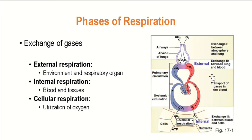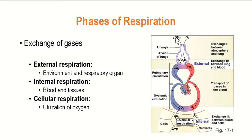To better understand this, let us take a look at the figure to your right. Exchange number one refers to external respiration — exchange of gases between the atmosphere and the lung, which is the respiratory organ. In our figure, the focus is on organisms exhibiting lungs, but this may vary depending on the organism and their respiratory surface. Regardless, external respiration refers to the entry of oxygen and then the exit of carbon dioxide — that is the exchange.